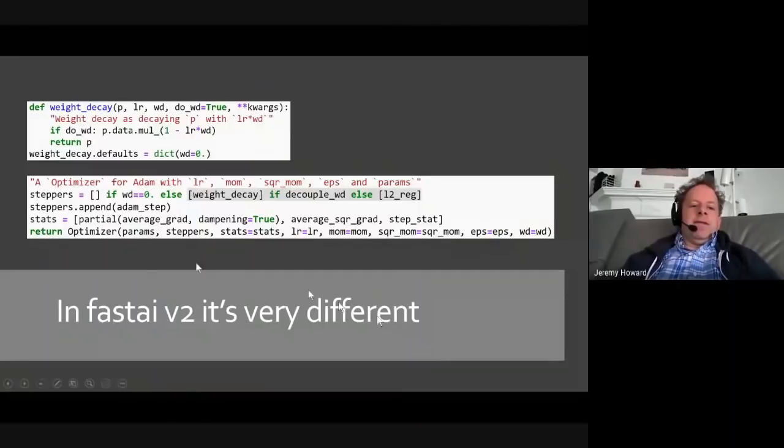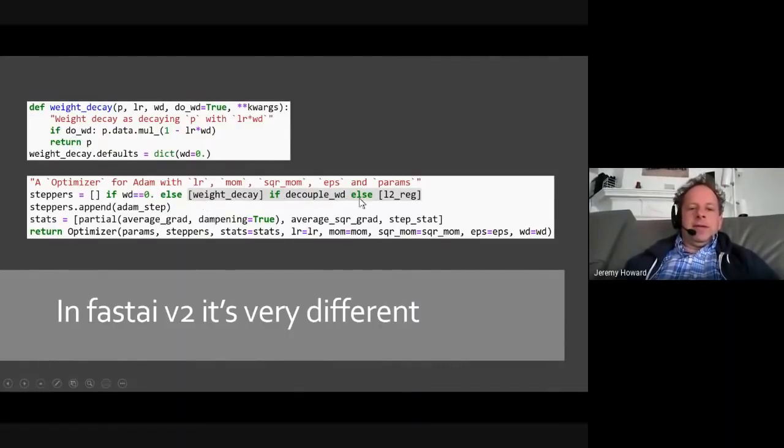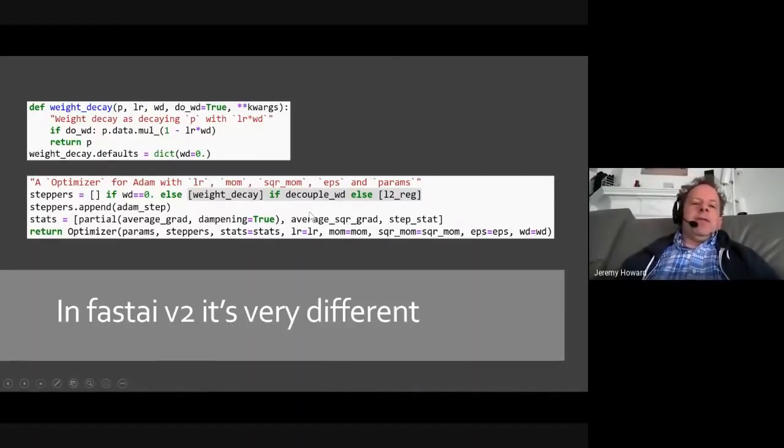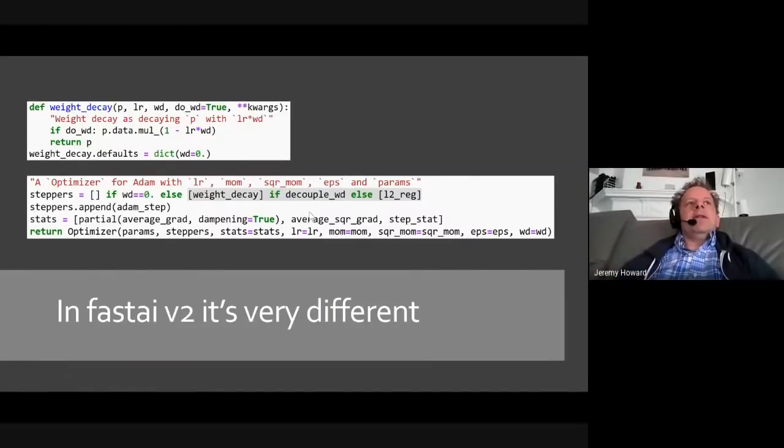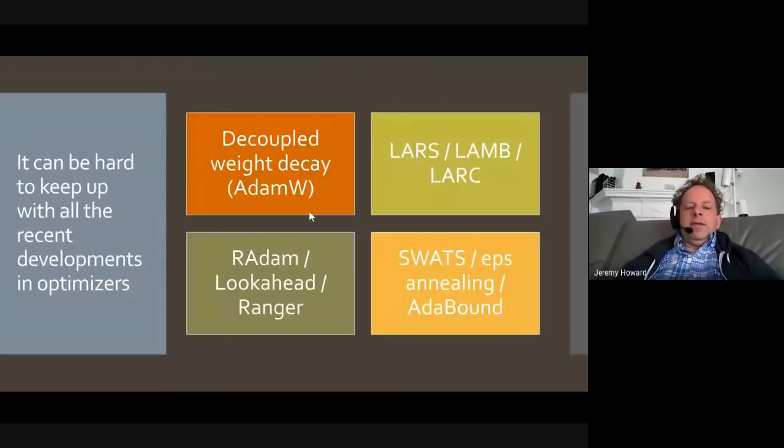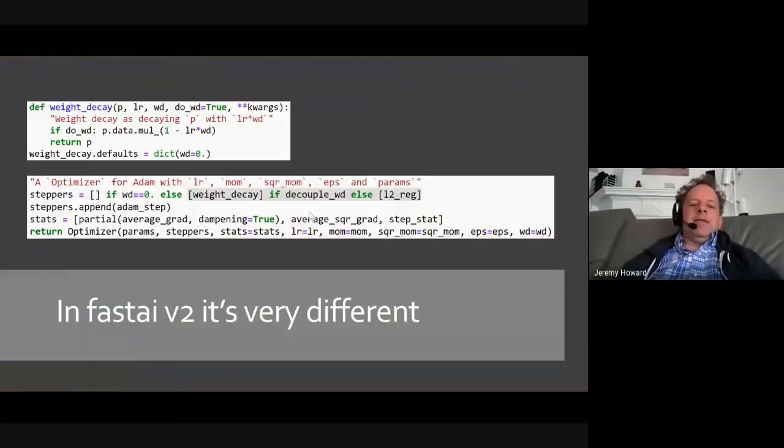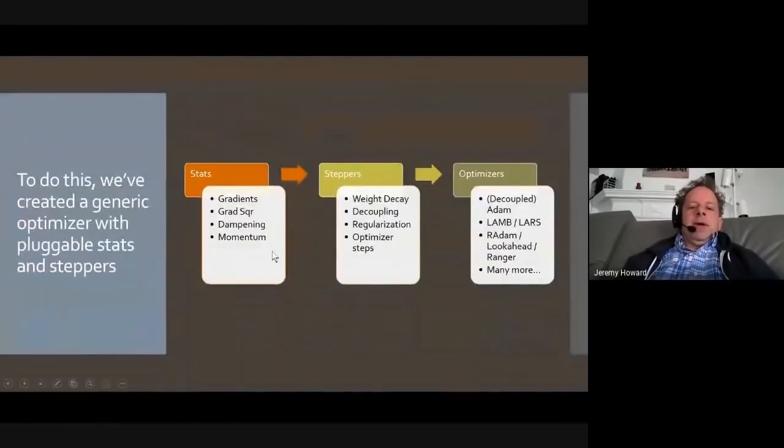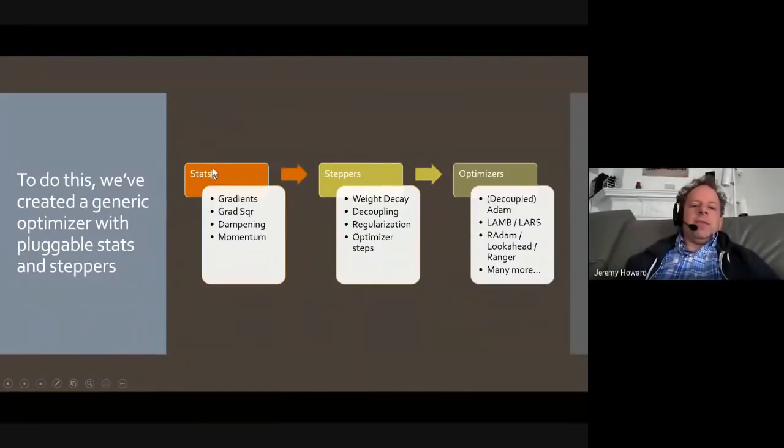On the other hand, FastAI's implementation, as you can see, involves a single extra function containing two lines of code and this little bit of gray here. So it's kind of like two and a half, three lines of code to implement the same thing. Because what we did was we realized, let's refactor the idea of an optimizer, see what's different for each of these state-of-the-art optimizers that have appeared recently and make it so that each of those things can be added and removed by just changing two things. Stats and steppers. A stat is something that you measure during training, such as the gradients or the gradient squared, or you might use dampening or momentum or whatever. And then a stepper is something that uses those stats to change the weights in some way.